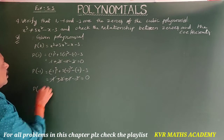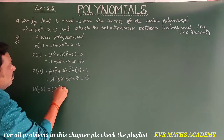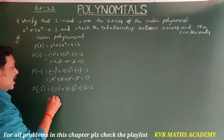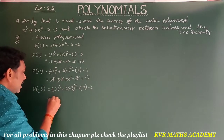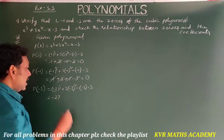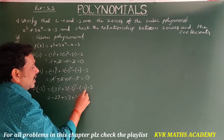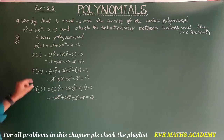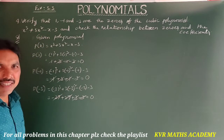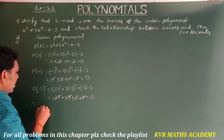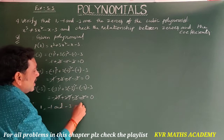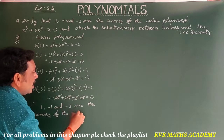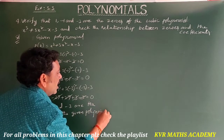P(-3) = (-3)³ + 3(-3)² - (-3) - 3 = -27 + 3(9) + 3 - 3 = -27 + 27 + 3 - 3 = 0. So -3 is also a zero of the given polynomial. Therefore, 1, -1, and -3 are all zeros of the given polynomial P(x).